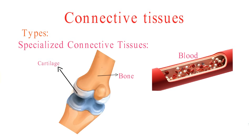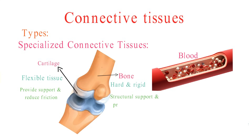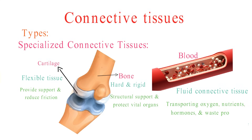Cartilage is a firm, flexible tissue found in various parts of the body, providing support and reducing friction in joints. Bone tissue is hard and rigid, offering structural support and protecting vital organs. Blood, our fluid connective tissue, plays a crucial role in transporting oxygen, nutrients, hormones, and waste products throughout our bodies.